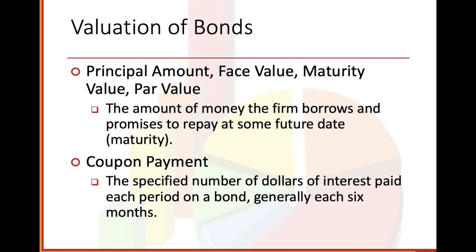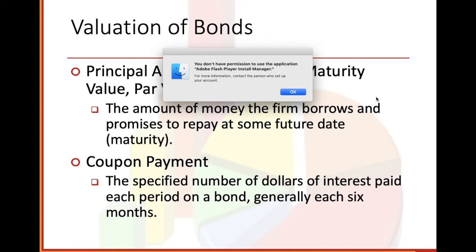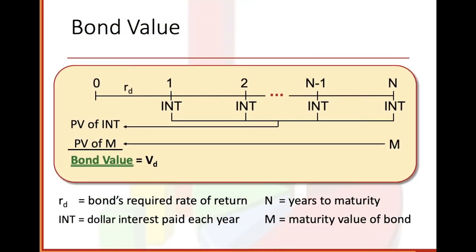Valuation of bonds: principal amount equals face value equals maturity value equals par value — the amount of money the firm borrows and promises to repay at the maturity date. Coupon payment — the specified number of dollars of interest paid each period on a bond, generally each six months. Bond value: V_D equals present value of interest plus present value of maturity. V_D is bond value, R_D is bond's required rate of return, INT is dollar interest paid each year, N equals years to maturity, and M equals maturity value of the bond.